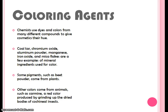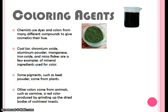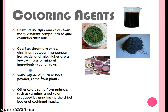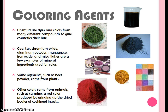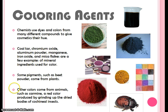The first component in makeup is coloring agents. Chemists use dyes and colors from many different compounds to give their cosmetics color. Coal tar, chromium oxide, aluminum powder, manganese, iron oxide, and mica flakes are a few examples of minerals used for makeup colors. Some products from plants such as beet powder can also be used in makeup, and others are from animals, such as this bug which is ground up and used in your makeup to make a red color.